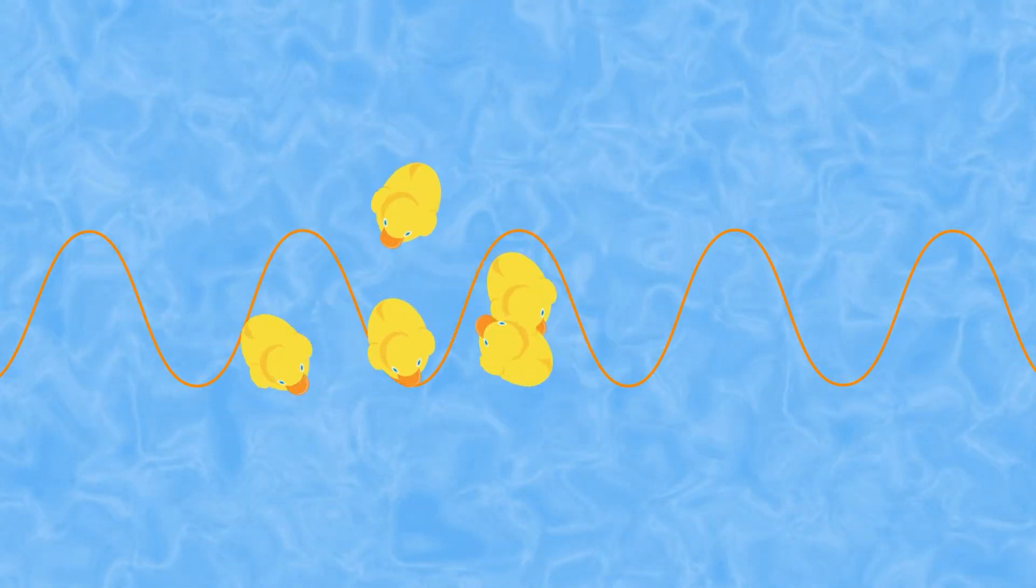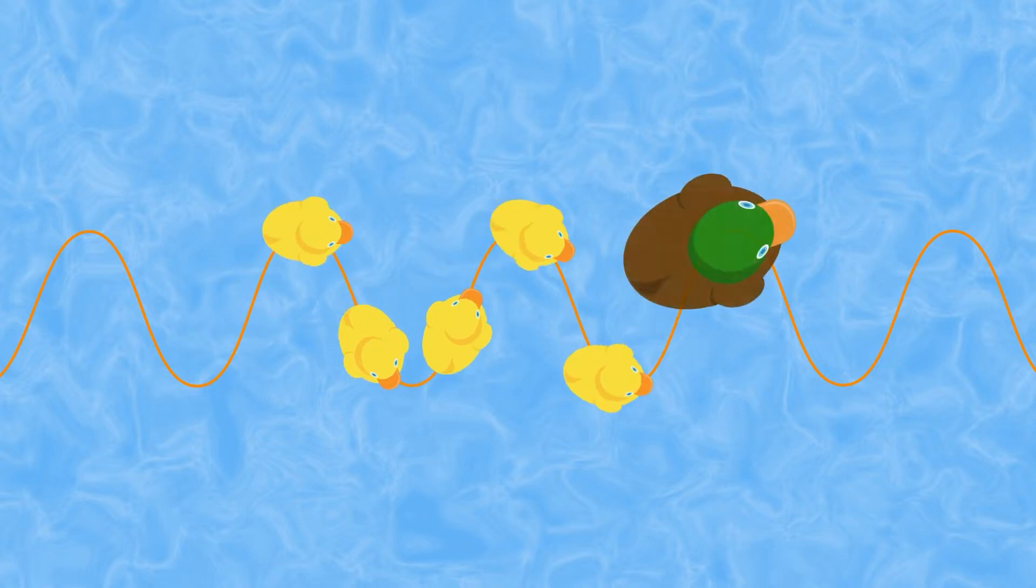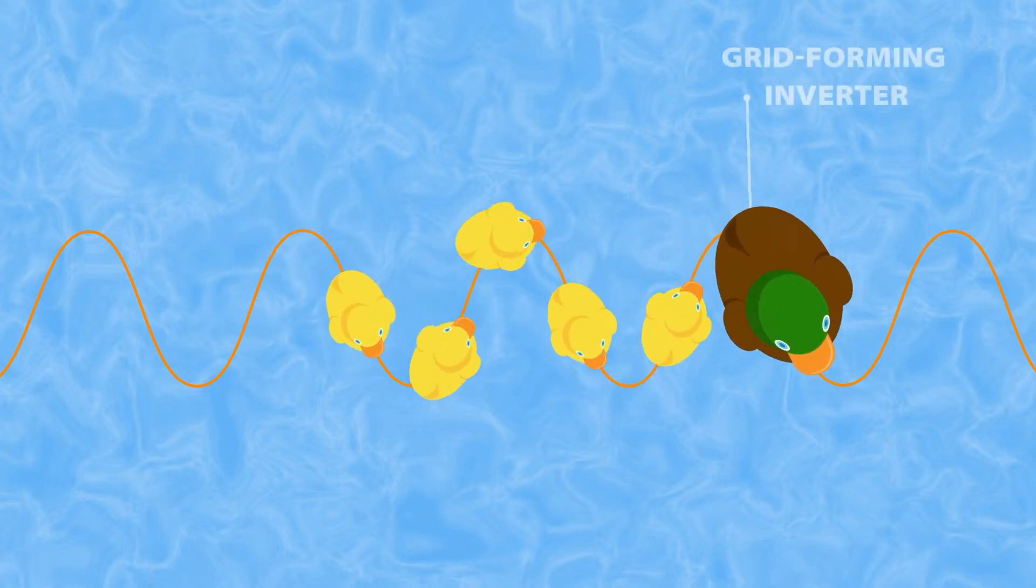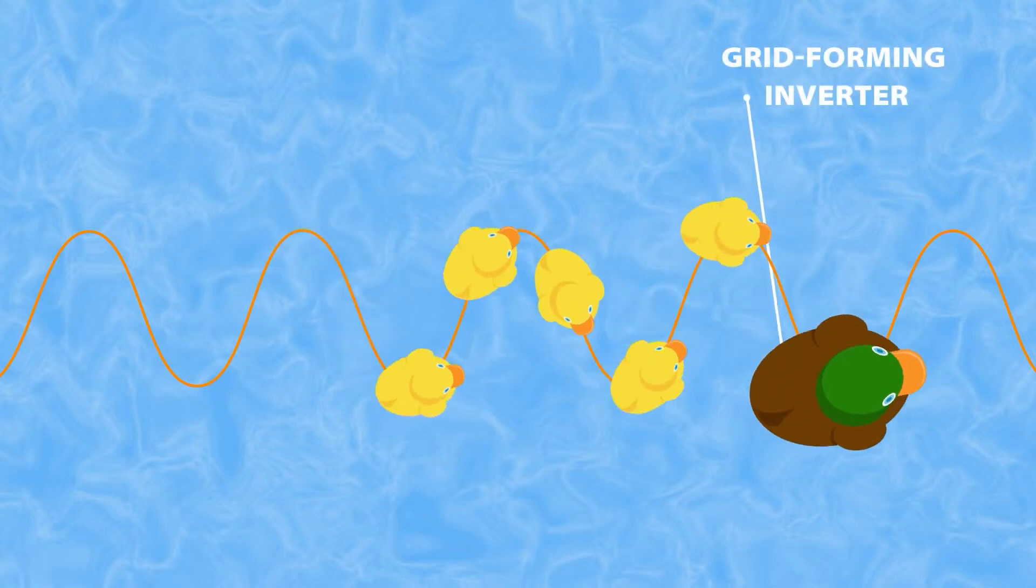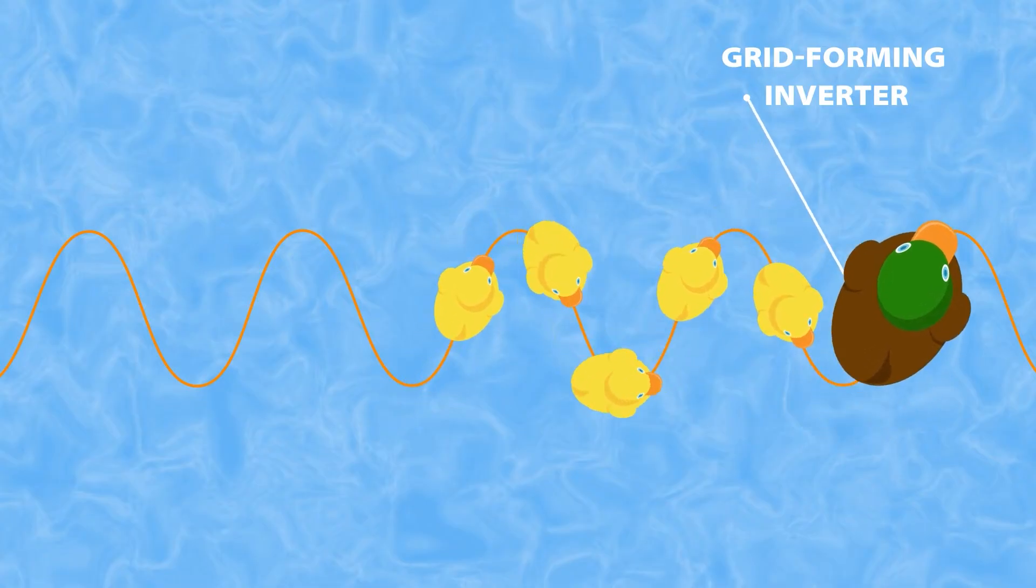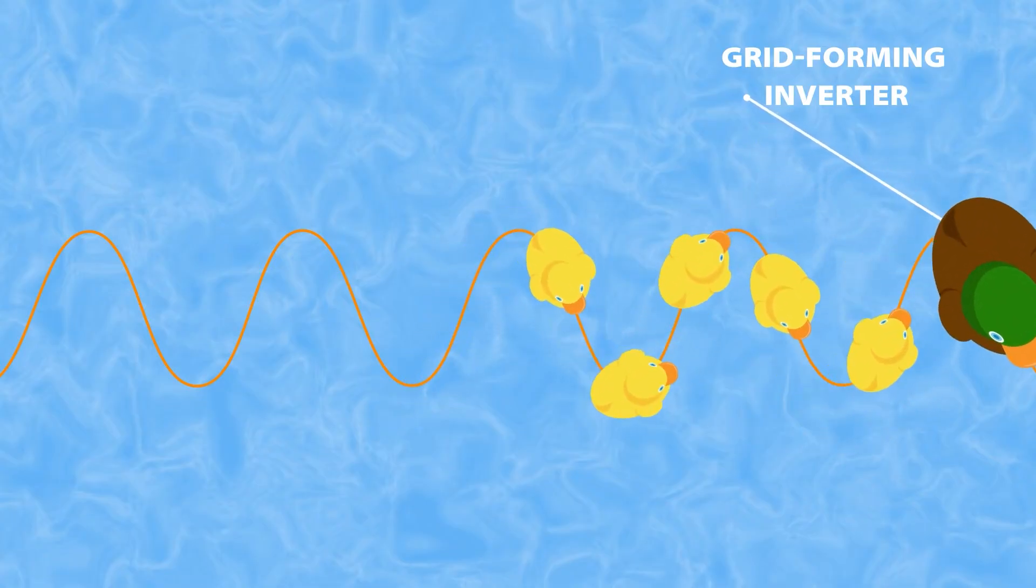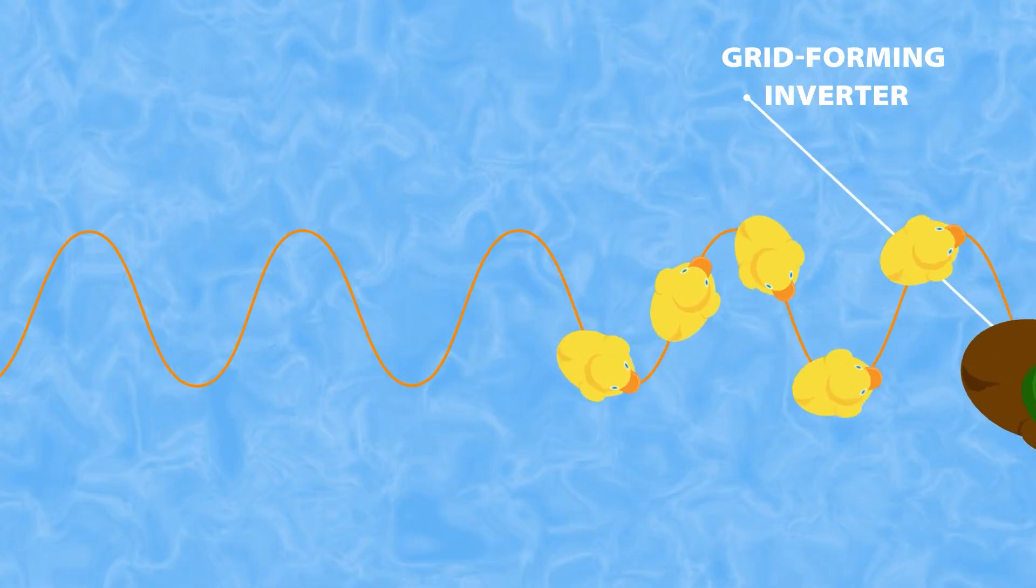power systems with large amounts of inverter-based resources require some of the inverters to form the grid. Grid-forming inverters generate electricity to other inverters to reference, providing a rapid response to maintain stability.